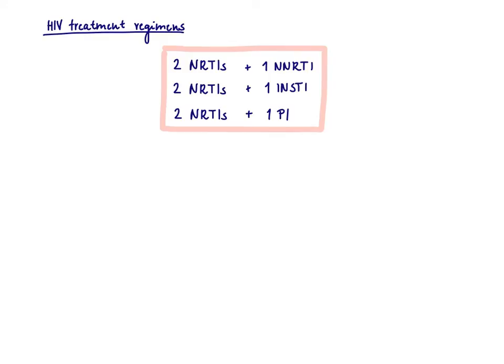Regarding the HIV treatment regimen, while HIV was once a deadly disease, huge progress has been made and patients can now take one pill once a day — not to cure HIV, but to manage it as a chronic disease, with a lifespan nearly as long as someone without HIV. The regimen always uses the same structure: a backbone of two NRTIs, plus either one NNRTI, one integrase inhibitor, or one protease inhibitor.